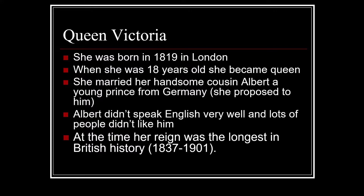At the time, Victoria's reign as Queen was the longest in British history — from 1837 to 1901, some 64 years. Queen Victoria lived for 81 years, which in the Victorian age was very unusual because life expectancy was a lot shorter than it is today.